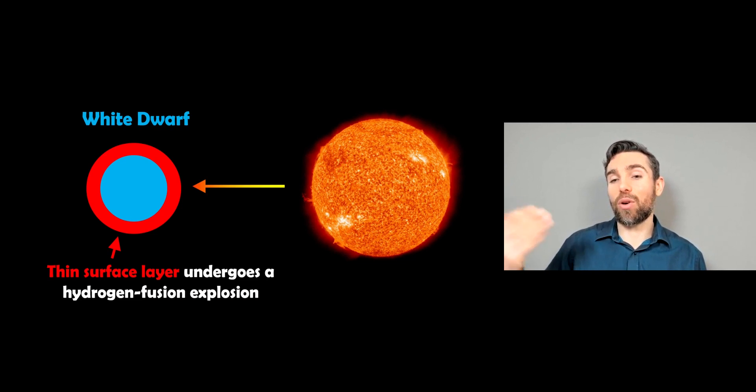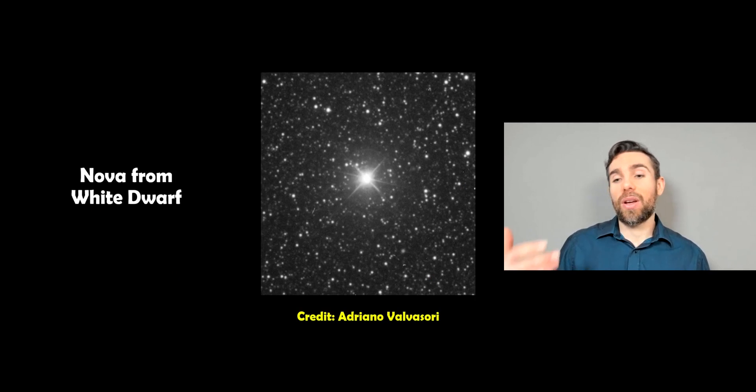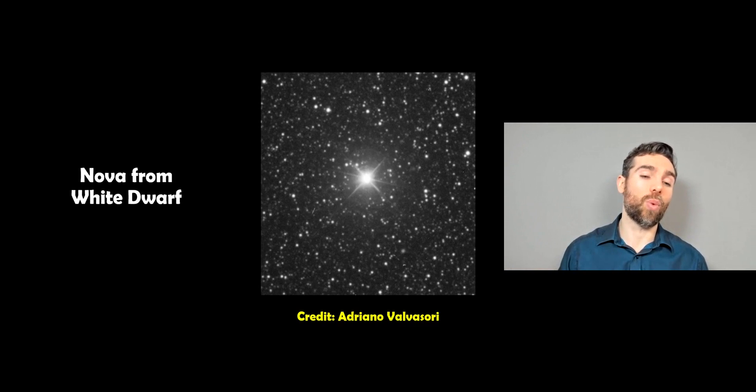That white dwarf star is still below that critical mass though, before it has a type 1a. So what you would typically see is that you'd have those occurring multiple times before you end up with a type 1a.